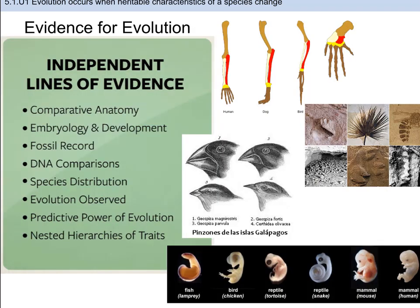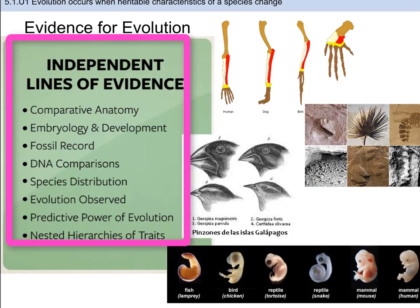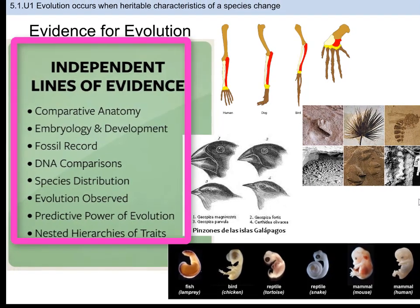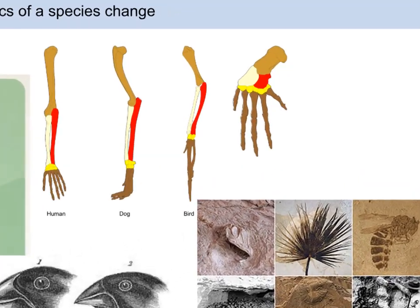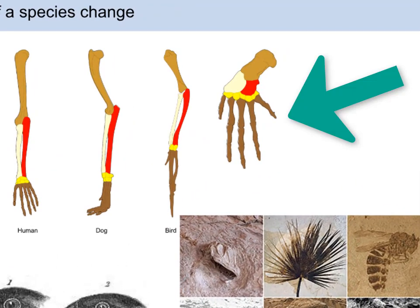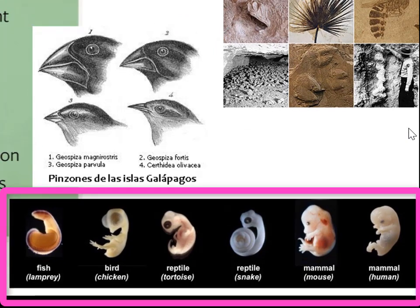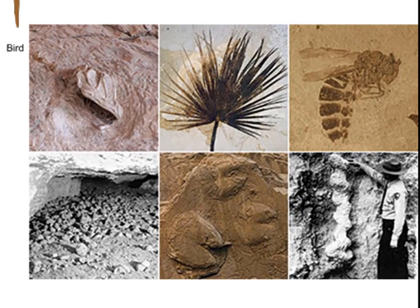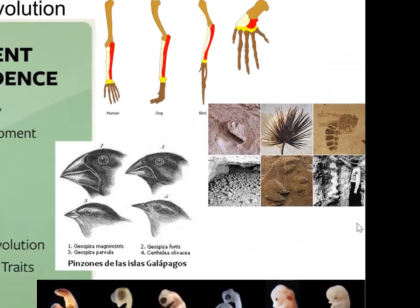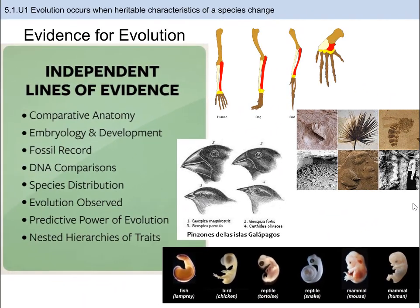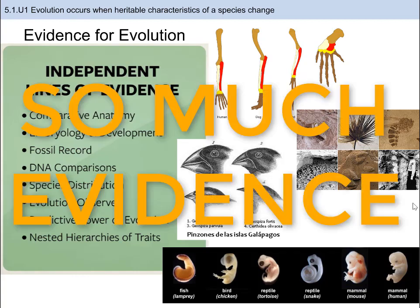There is so much evidence for evolution, and you can see those listed here. You can also watch the video that will strengthen your understanding of these lines of evidence. Comparative anatomy is comparing body parts of organisms. Embryology and development deals with unborn organisms. Fossils can be used to compare once-living organisms with currently living organisms. DNA can also be looked at to see microscopic changes at the gene level. Where species live can also be used as a line of evidence. Lastly, we can observe evolution and predict the rates at which it can occur, and how much traits have changed over time.